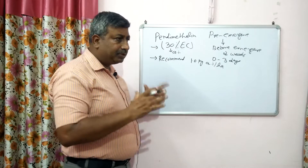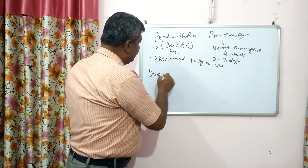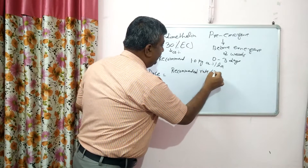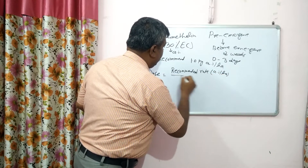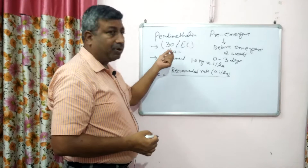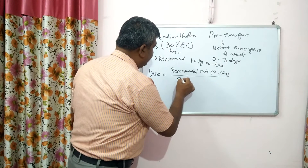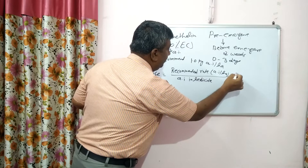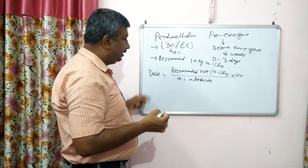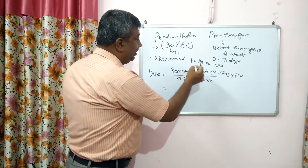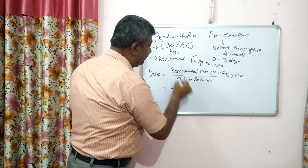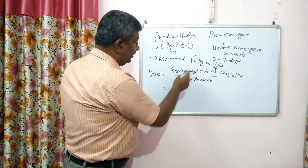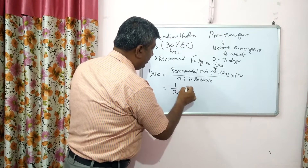So how to calculate the dose? The formula is: dose of herbicide = recommended rate (kg AI per hectare) divided by AI percentage in the herbicide, multiplied by 100. For pendimethalin, the recommended rate is 1 kg AI per hectare and the AI is 30%.